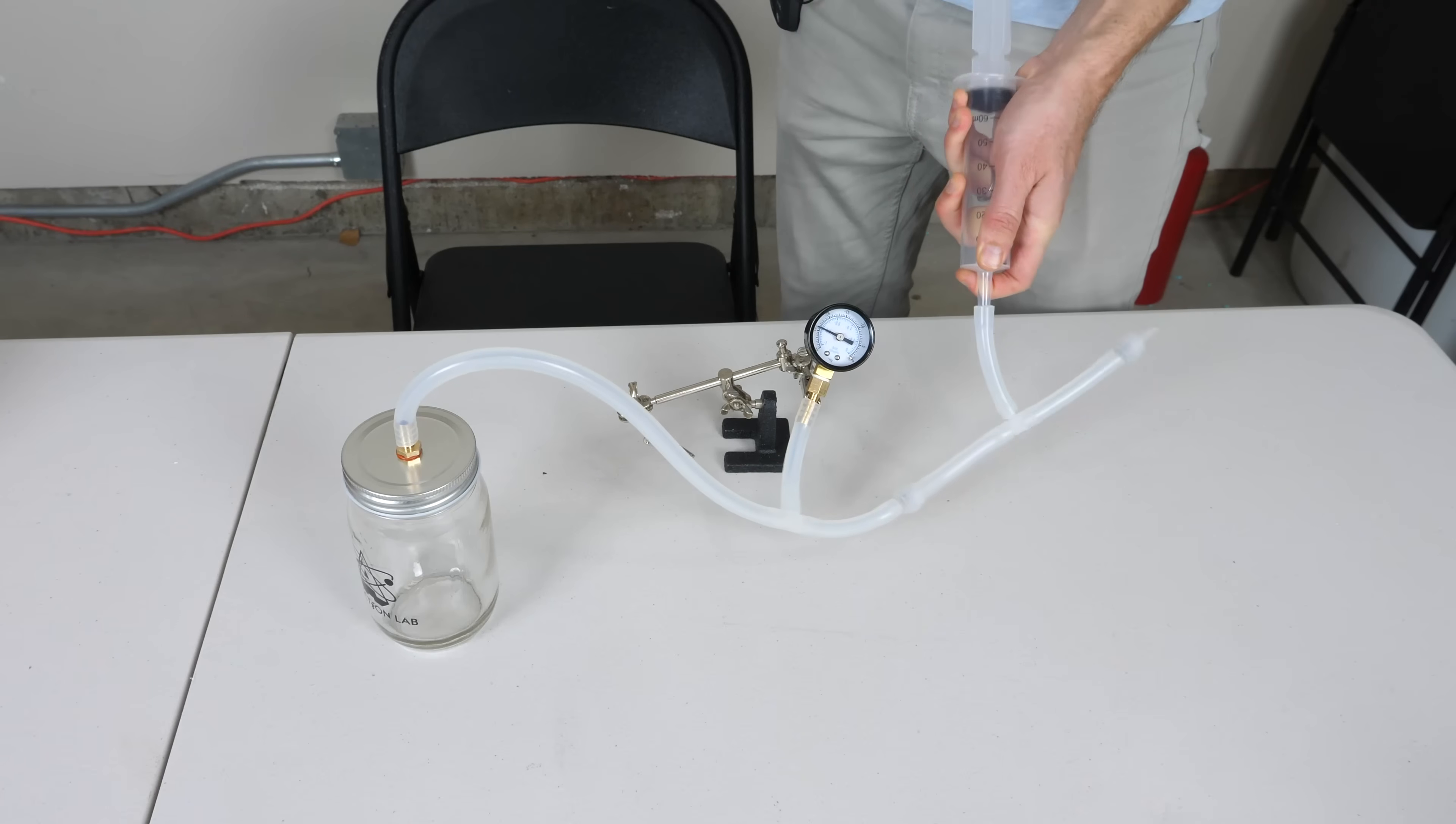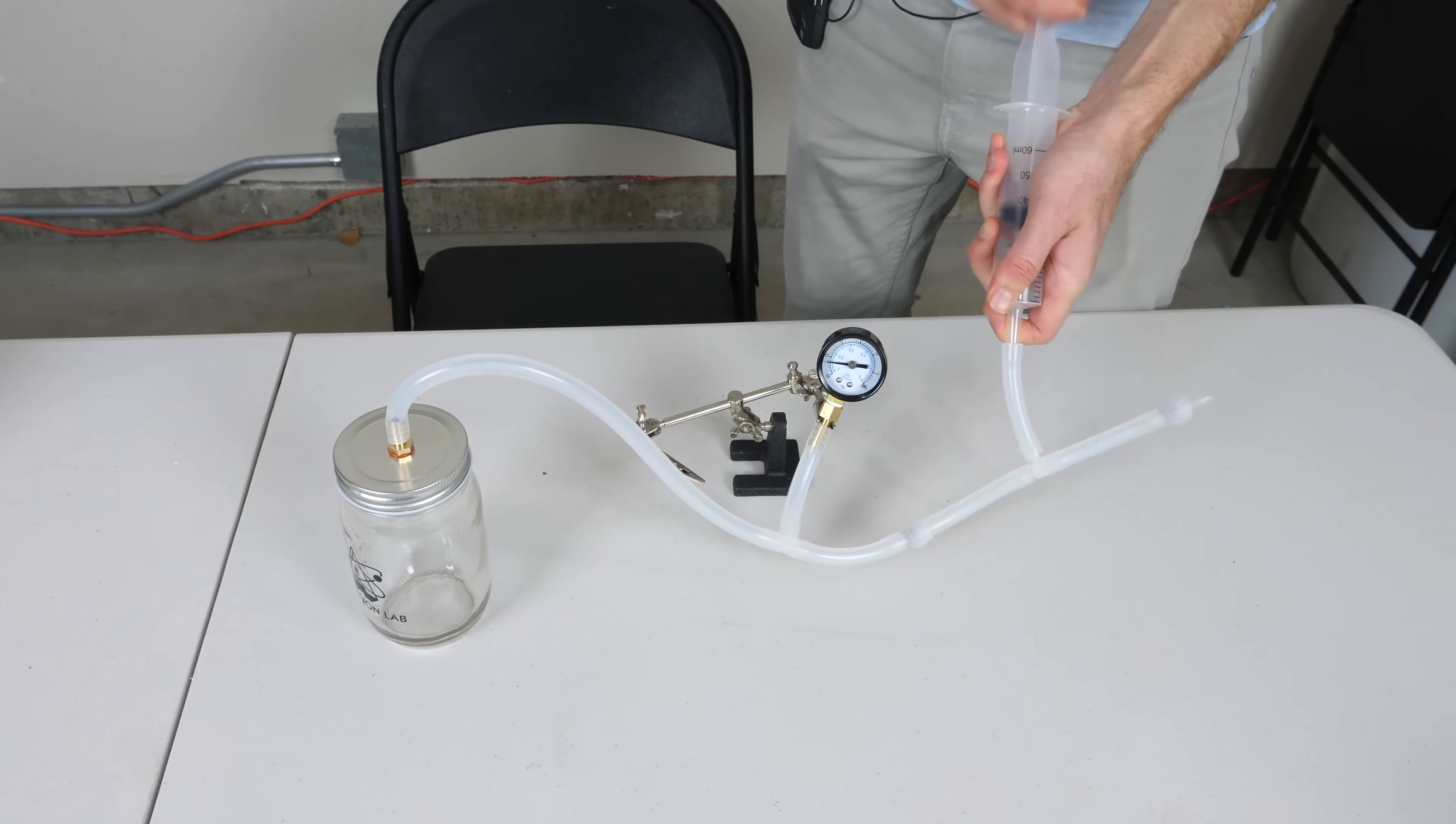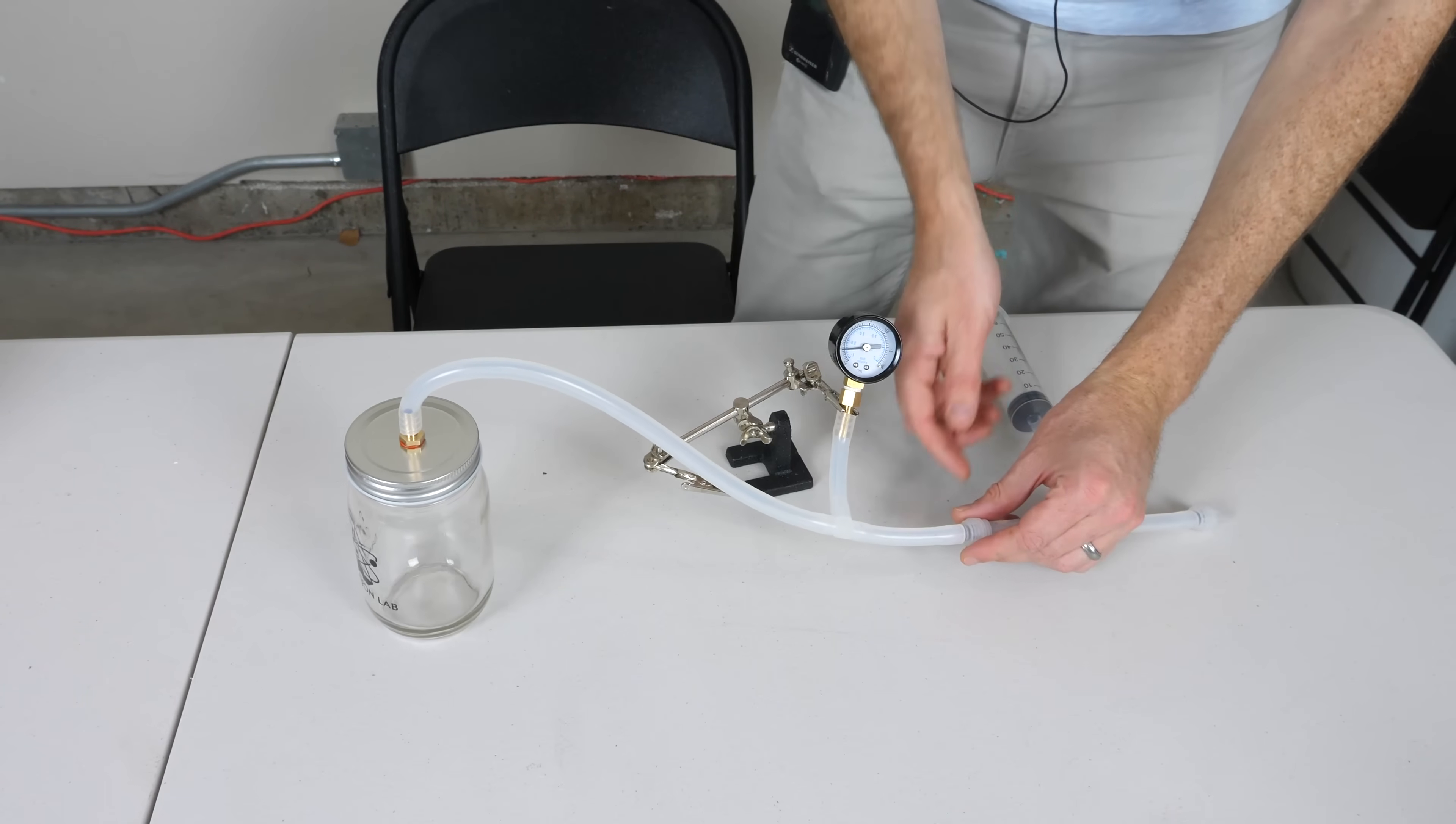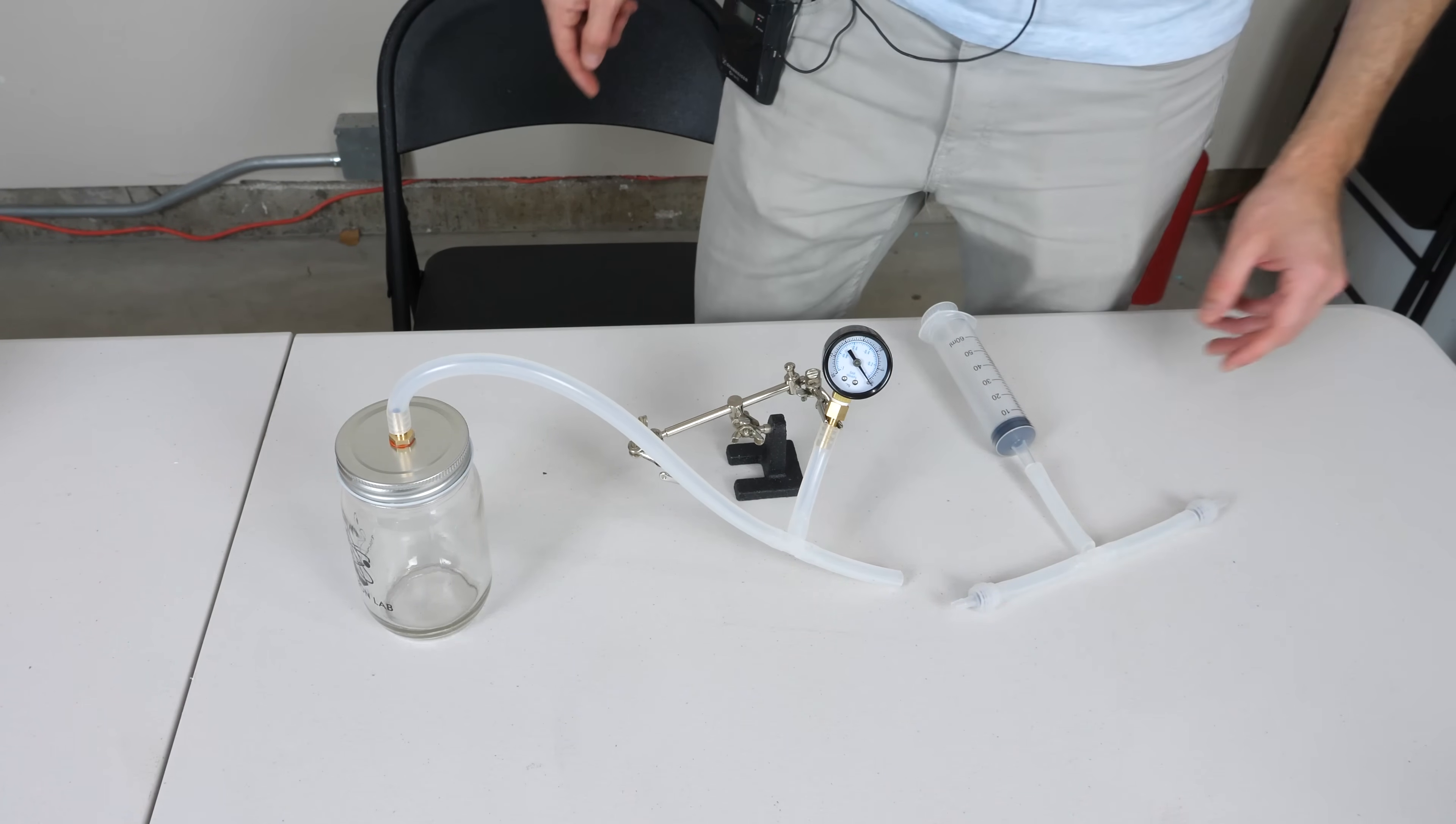But after a few pumps, you should be able to get down to the maximum vacuum you can get with this setup. You'll be able to tell when you're at maximum vacuum because additional pumps won't make the pin go lower. Once you need to let the air back in, you can choose any one of these places, just pull off the tube and let the air back in and the pin should go back to atmospheric pressure.